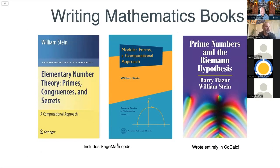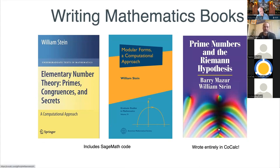Along the way I wrote some books. These books all have bits of code in them that you can run online or by looking at the book. The last book on the Riemann hypothesis with Barry Mazur — we wrote this entirely in CoCalc, collaboratively. It was a good test that you could work on a document with many images and about 150 pages in one LaTeX editor.